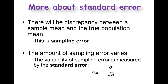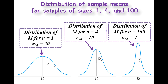Sampling error is just that natural discrepancy between the sampling mean and the true population. The amount of sampling error varies, and you find your standard error by dividing the standard deviation by the square root of n. Looking at these distributions of sample means: when sample size is 1, standard error is 20. When you quadruple it to 4, standard error goes in half. When you have 100 people in your study, standard error is only 2. As sample size increases, standard error decreases.